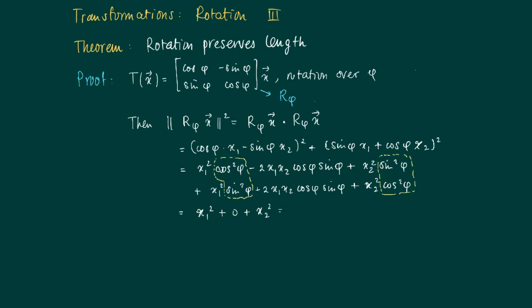What we obtain is that we actually get x1 squared plus—if you take this term here, they cancel because here is a minus sign, there is a plus sign—the zero plus x2 squared is actually the inner product of x with itself, which equals the norm of x squared. So we've shown that the length of the rotated vector x equals the length of x.